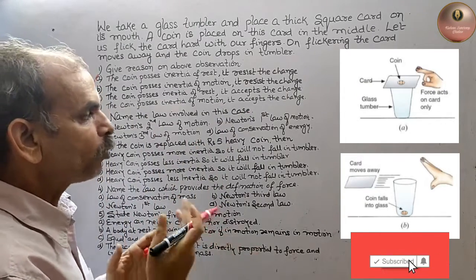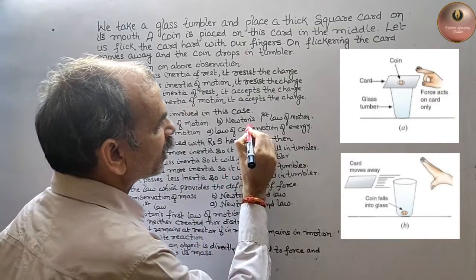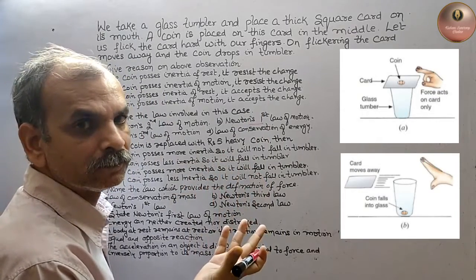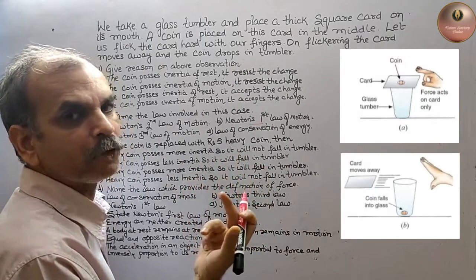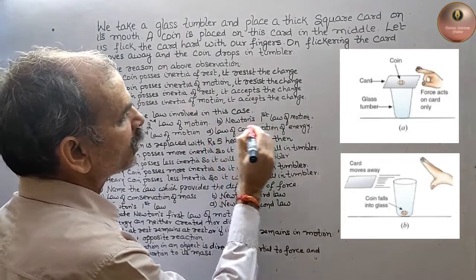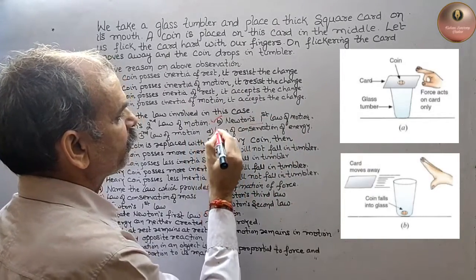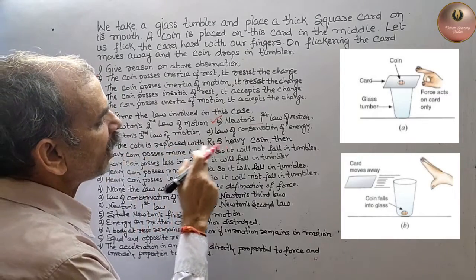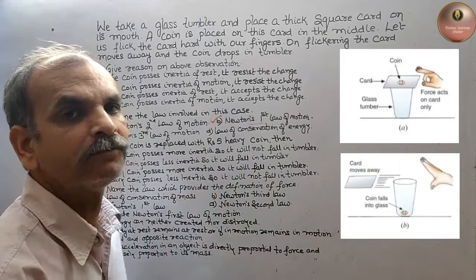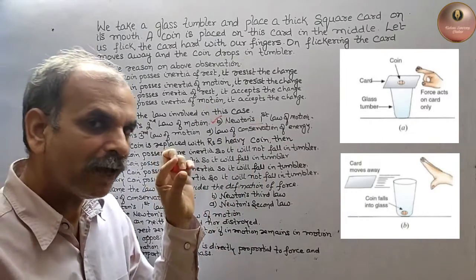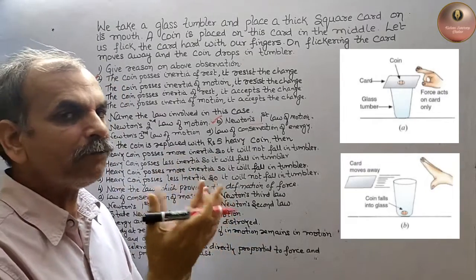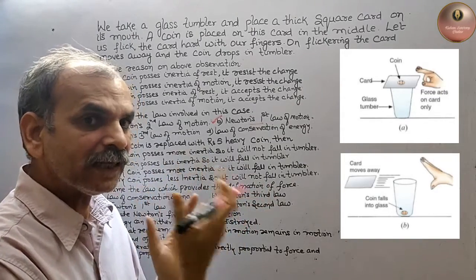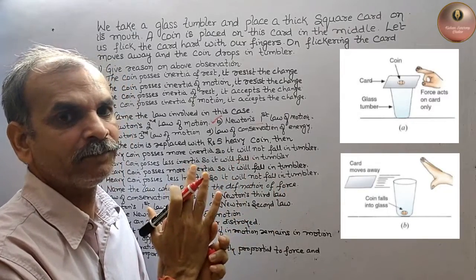The law involved in this case - if the coin is heavy and you place the coin on top, what will happen? I explained in my video that inertia is directly proportional to the mass. The more inertia, the more it will resist. So what will happen?